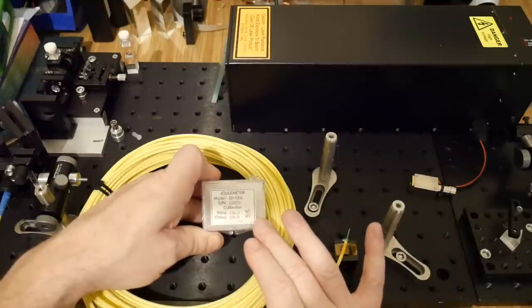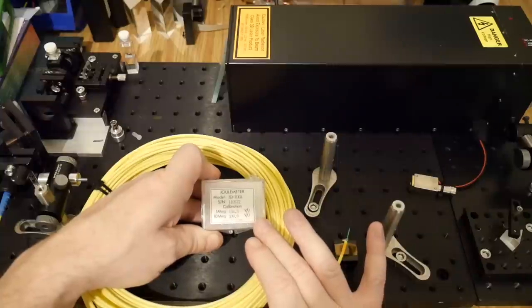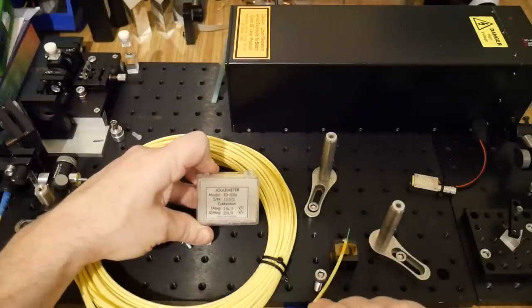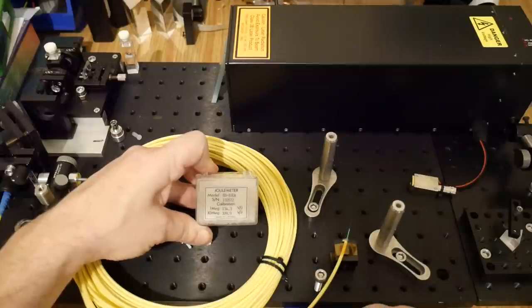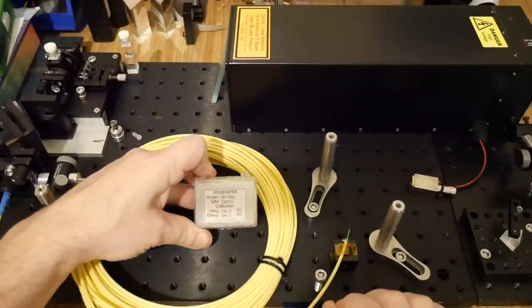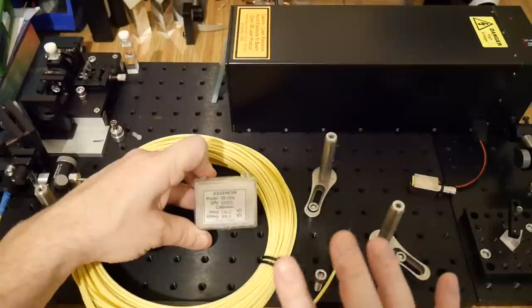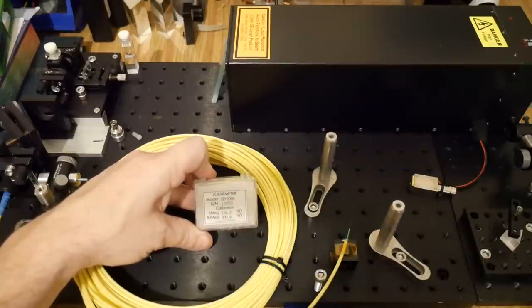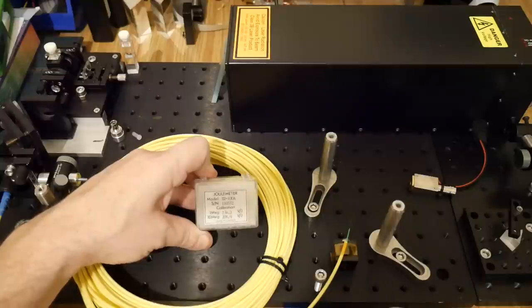The signal doesn't measure in the time domain and in fact when we see it on the scope we'll be using a relatively slow time base of about two milliseconds per division. What actually happens is when light impinges on the surface of the sensor it generates a tiny amount of heat. This is picked up by a pyroelectric sensor and the little output pulse that we get we can simply measure the height of the pulse and that gives us how many microjoules or millijoules we're seeing.